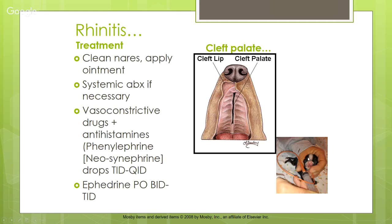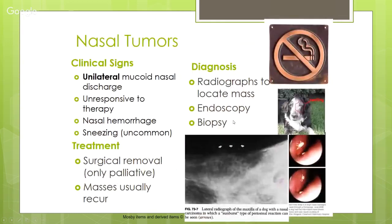Cleft palate can be a cause of rhinitis. It's a congenital defect — sometimes genetic, sometimes a malformation during fetal development. The two sides of the hard palate should be grown together at birth; if not, there's a hole from the mouth into the nose, and anything going into the mouth can get up into the nose, causing inflammation from foreign material.